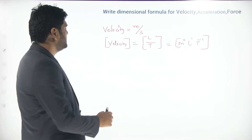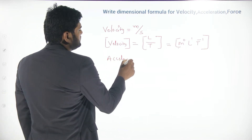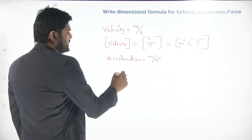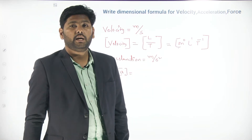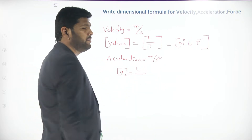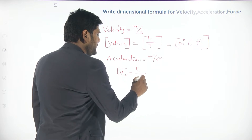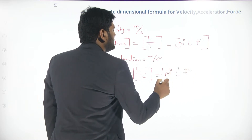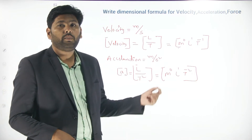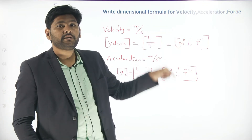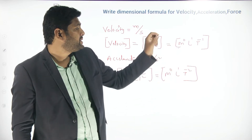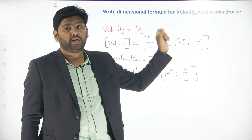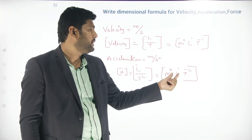Next, let us find the dimension formula for acceleration. Acceleration is expressed as meter per second squared. Meter is the unit for length so it is L, and second squared gives T². So acceleration = M⁰ L¹ T⁻². The dimension of mass is zero, dimension of length is 1, and dimension of time is minus 2.